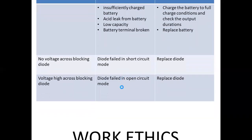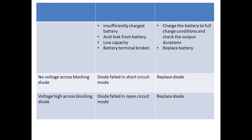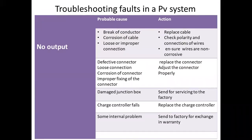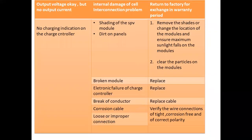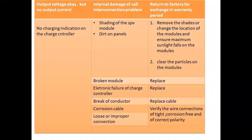To summarize: there is no output voltage, no charging indication, no voltage across the blocking diode, and high voltage across the blocking diode. These are the conditions and symptoms. We will talk about what problems cause these symptoms and the action plan.